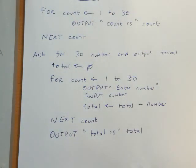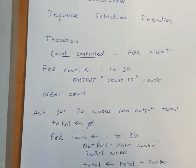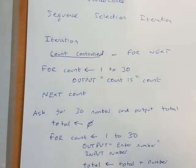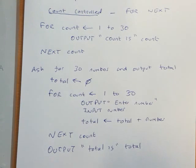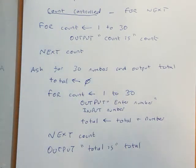Count-controlled loop - we know how many times a loop needs to run, so we use a for next loop. Okay, so it might be worth maybe rewinding the video, have a little practice of writing out a for next loop. Just remember that we call that count-controlled. Thank you very much.